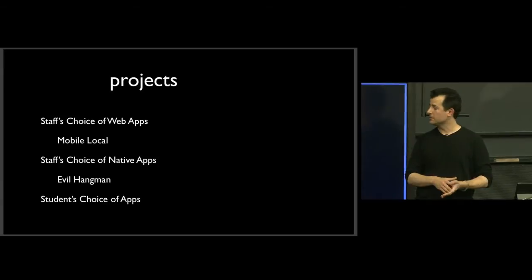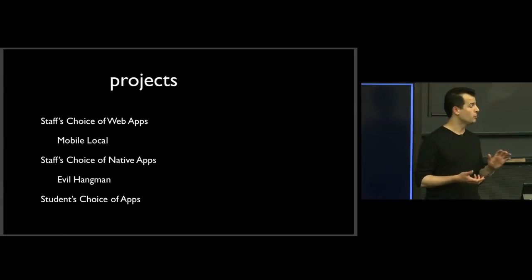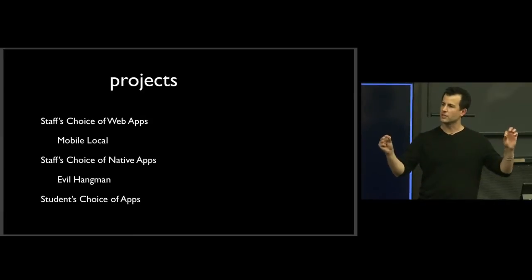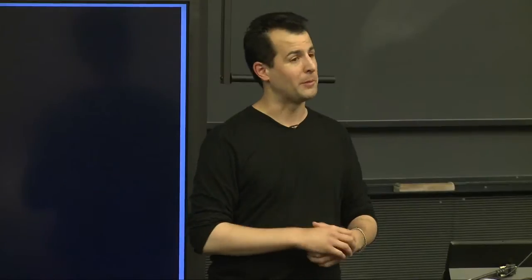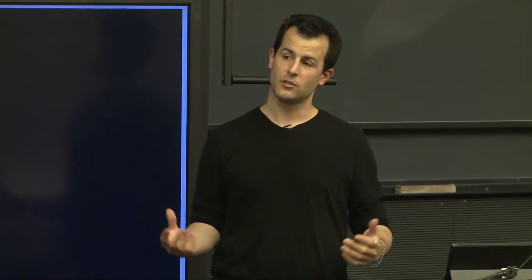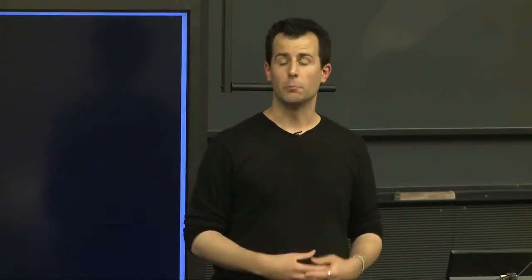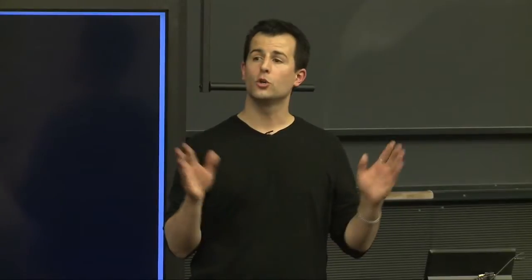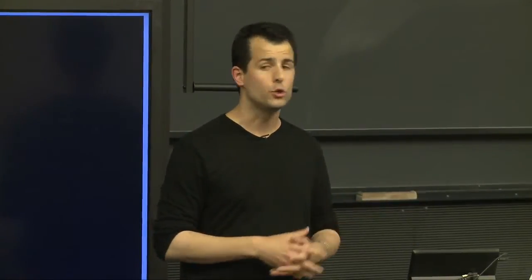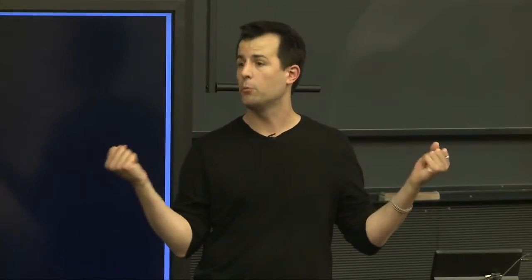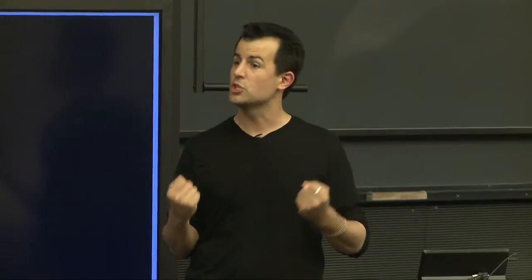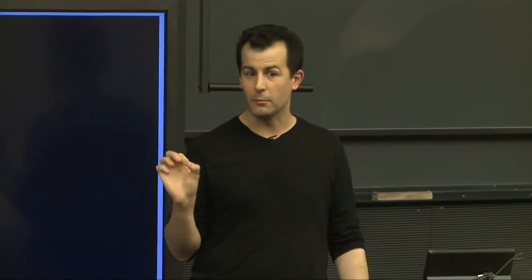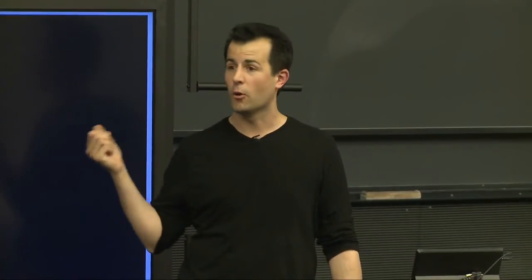Evil Hangman will be an iOS implementation of Hangman, but much more evil. Rather than having you guess letters the computer is thinking of, the evil Hangman version cheats — any time you guess a letter like E, your phone changes the word it was thinking of and re-chooses a word of the same length that has no E's. When you guess A, it throws away the word and makes sure it has no E's or A's, and so on — until finally it beats you with a word like 'dog.' Implementing this and calling it simply Hangman is a wonderful way to make your friends think they're awful at the game.